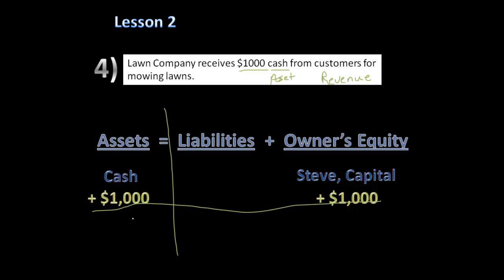On the left side we have $1,000 in assets, and on the right side we also have $1,000 in owner's equity. So $1,000 equals $1,000 — our transaction is balanced.